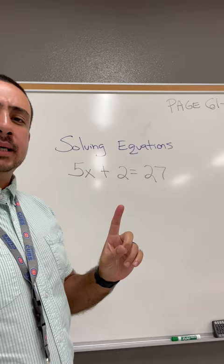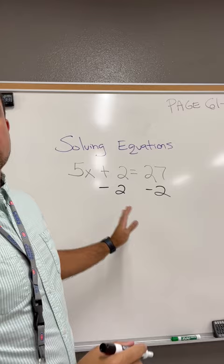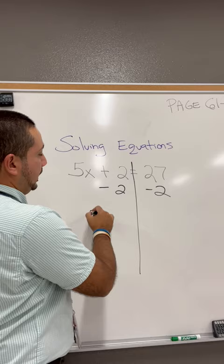Step 1, do the opposite operation. Instead of plus 2, you minus it on both sides to keep the equation balanced.